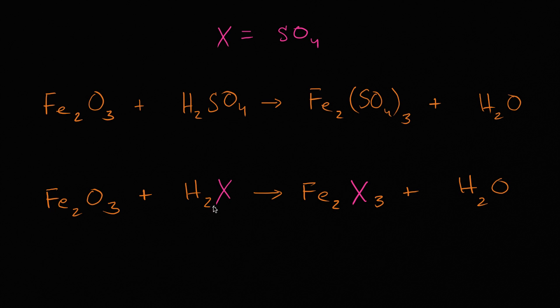And so now even though X represents an entire group, let's treat it like an element. And let's make sure we have the same number of X's, or the same number of sulfate groups on both sides. So let's balance this chemical equation.